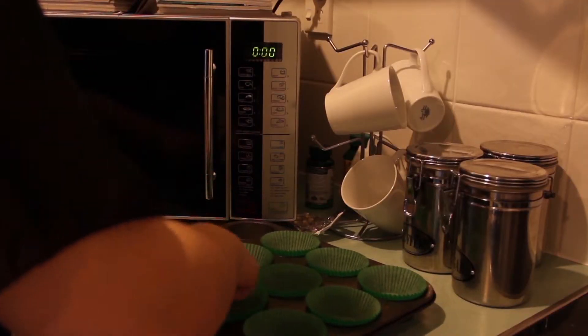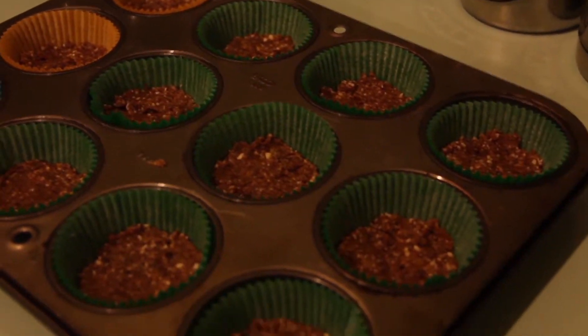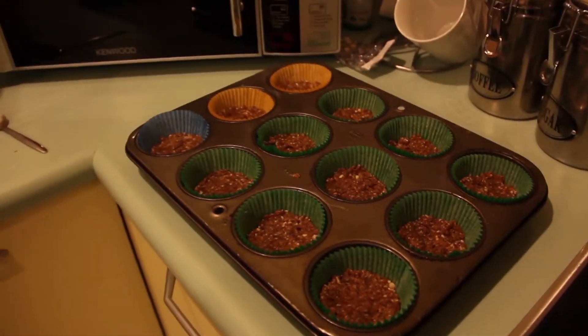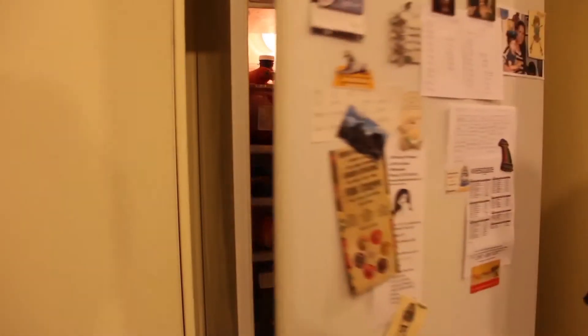Then you spoon that into your pumpkin pie molds however you want them. I made mine small, and when that's all done, stick it in the fridge and that will just harden while you make the other part.